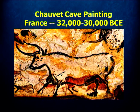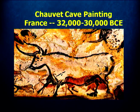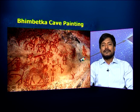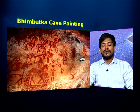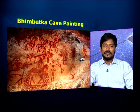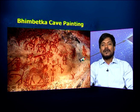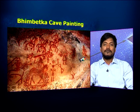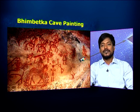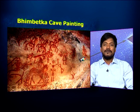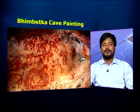They used charcoal, blood, animal fat, and the dry earth colors available to them. In India, in Madhya Pradesh, there is a place called Bhimbetka — a set of caves discovered there, named after the place where Bhim used to sit. The caves are named Bhimbetka and this is again one of the early examples of cave paintings in India, from around 30,000 to 40,000 BCE.